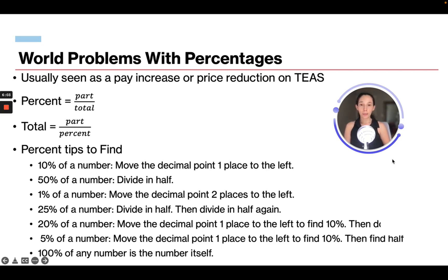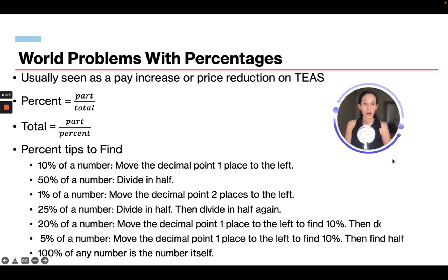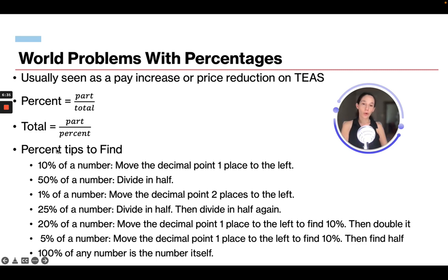For 25% of a number, divide it in half and then in half again — so 25% of 50: half is 25, half again is 12.5. For 20% of a number, move the decimal point one place to the left and then double that number — so 20% of 50: move the decimal to get 5, then double to get 10.